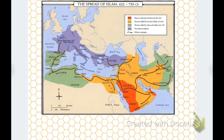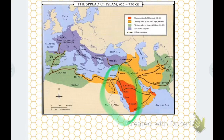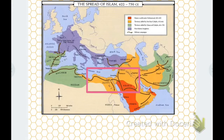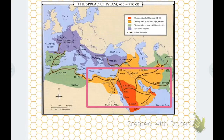The spread of Islam is color-coded here — easy to understand. The initial start with Muhammad from 622 to 632 is shown in red on the Arabian Peninsula. After that, the four caliphs before the Umayyad expanded into the orange area, moving out of the Arabian Peninsula into the Sassanid, into Ptolemaic Egypt, and knocking on the Byzantines.